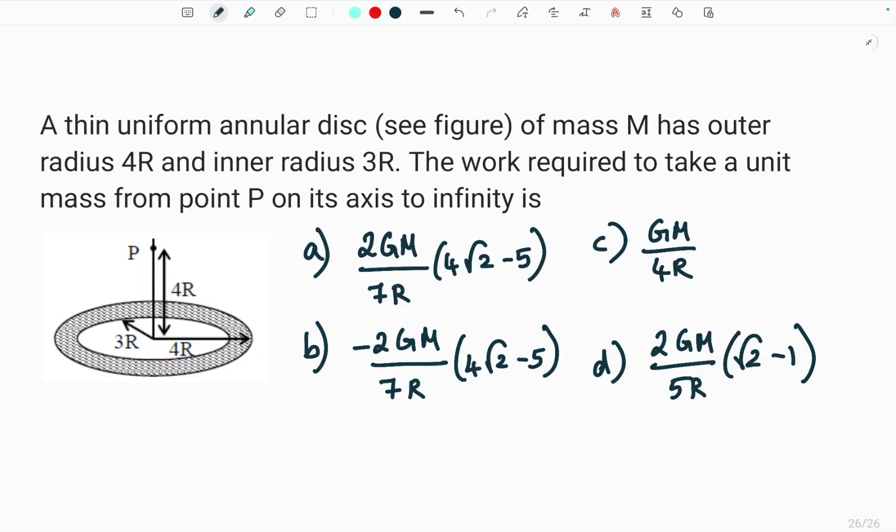In this question, it is given that a thin uniform annular disc of mass capital M has outer radius 4r and inner radius 3r. The work required to take a unit mass from point P on its axis to infinity is asked.